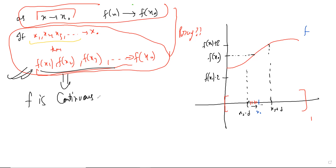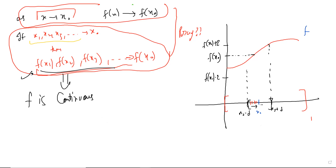This neighborhood has uncountably many elements, but you can capture the behavior by checking all sequences — that's the beauty of real analysis. The rationals Q can be listed, but real numbers cannot. Still, most statements in analysis that are defined in the real-number sense can be re-parameterized into sequence terms. That's why we study sequences: we actually want to study sets, but sequences are easier to work with because you can list them.